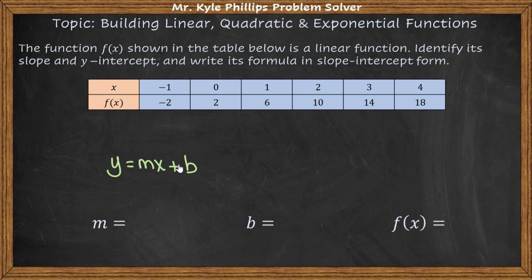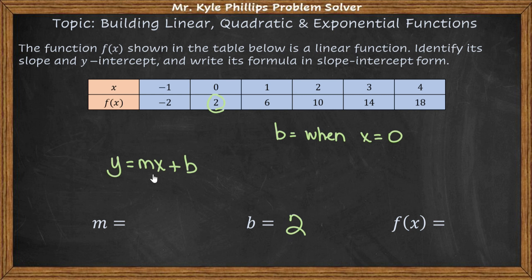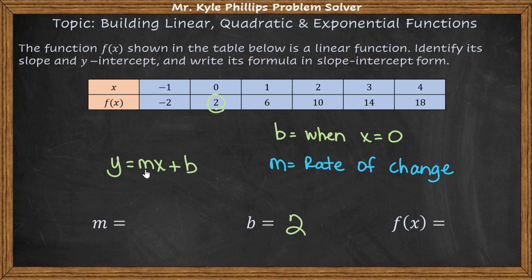The easiest one to find is probably going to be the y-intercept. B you can always find when x is equal to zero. So in my table I'm going to go where x equals zero, and that y value is going to be the value of b. Now we have to find the slope. The slope m is your rate of change. With a linear function, the rate of change is how the y values are changing from one x value to the next consecutive x value.